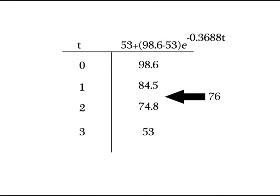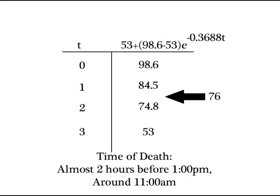The value of 76 degrees is somewhere between t = 1 and t = 2, being closer to the latter. Therefore, we can estimate that the time of death is almost 2 hours before 1:00 p.m., or around 11:00 a.m.